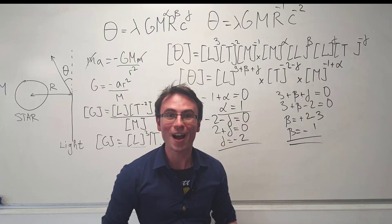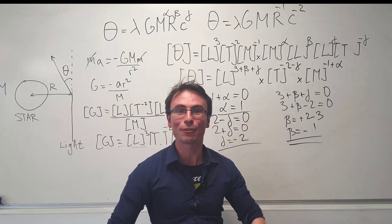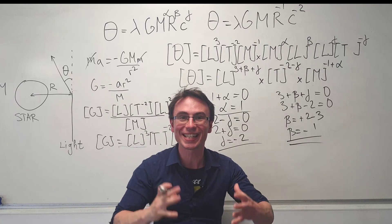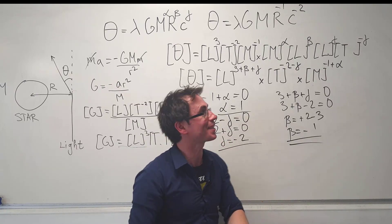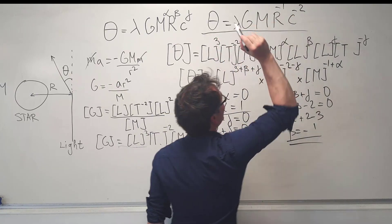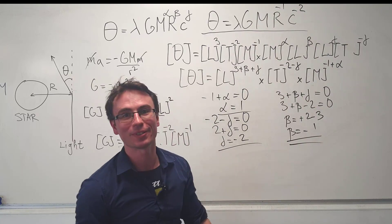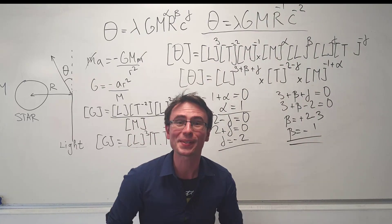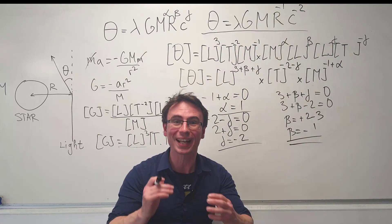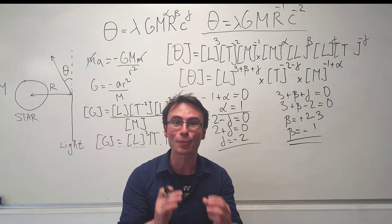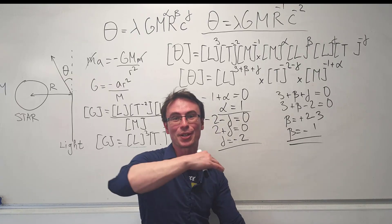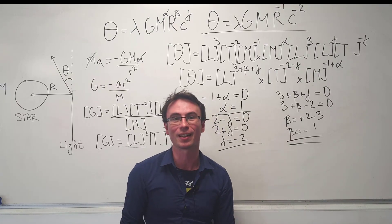Our final equation for the angle at which light is bent around a star is right here. Next, see how the famous physicist Max Planck applied this dimensional analysis technique to derive the Planck length — that video is just over here.